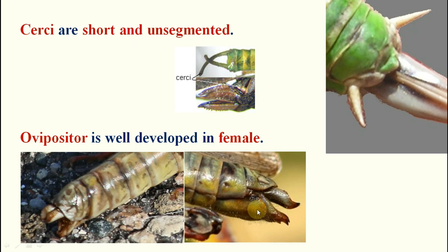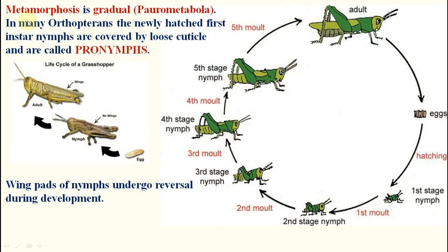The ovipositor is well developed in the female. Metamorphosis is gradual (paurometabolous): egg stage, nymphs, then adult. The difference between nymph and adult is body size, presence or absence of wings, and capability of reproduction. In many orthopterans, newly hatched first instar nymphs are covered by a loose cuticle and are known as pronymphs. The wing pads of nymphs undergo reversal during development.